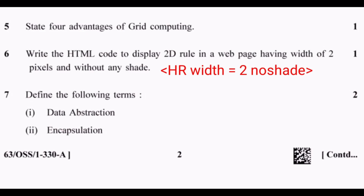Question 6: Write the HTML code to display a 2D rule in a web page having width of 2 pixels and without any shade. The code is: <hr width=2 noshade>.